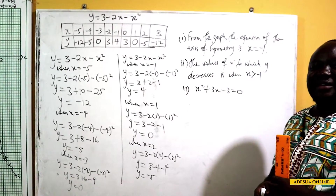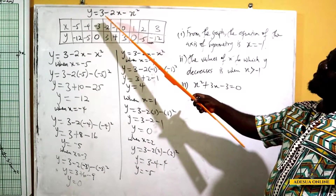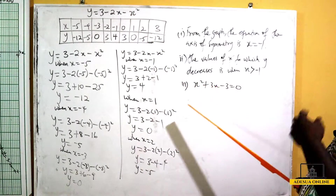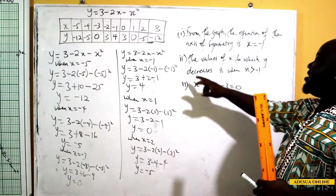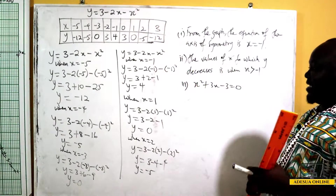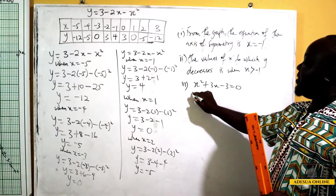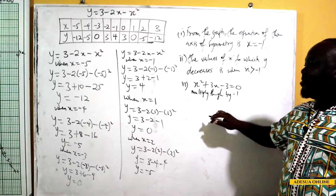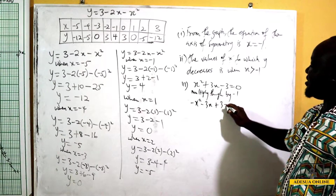Now we find the values of x for which x squared plus 3x minus 3 equals 0. We drew the graph of y equals 3 minus 2x minus x squared. To make x squared plus 3x minus 3 look like our curve equation, multiply through by negative 1, giving: negative x squared minus 3x plus 3 equals 0.